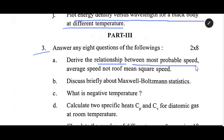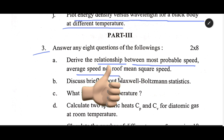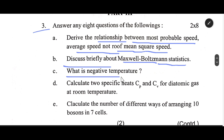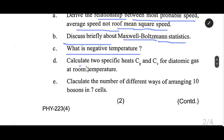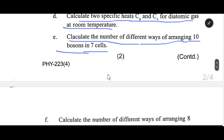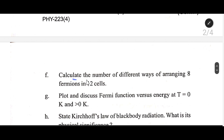Number Three: Derive the relationship between most probable speed, average speed, and root mean square speed. Discuss briefly about Maxwell-Boltzmann statistics. What is negative temperature? Calculate the two specific heats Cp and Cv for a diatomic gas at room temperature.